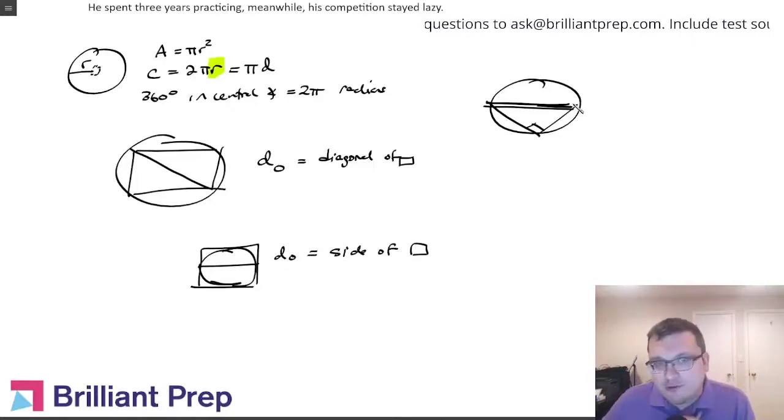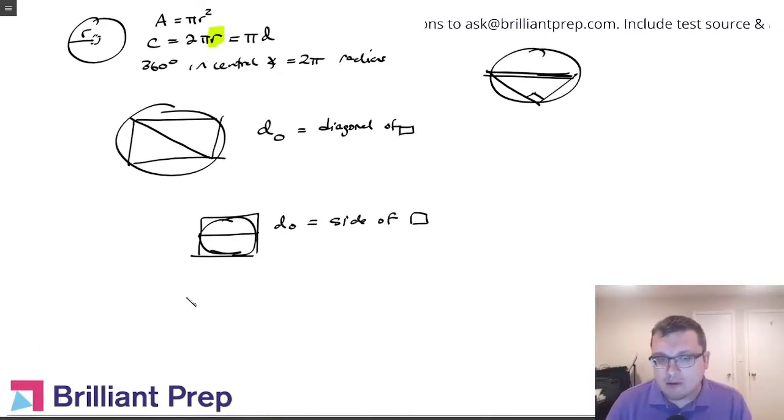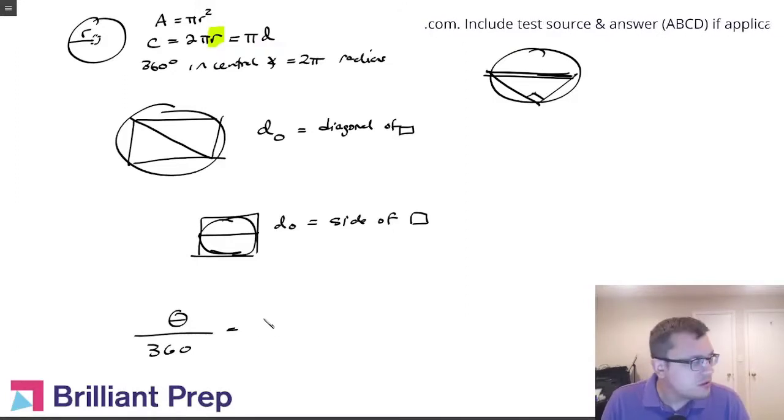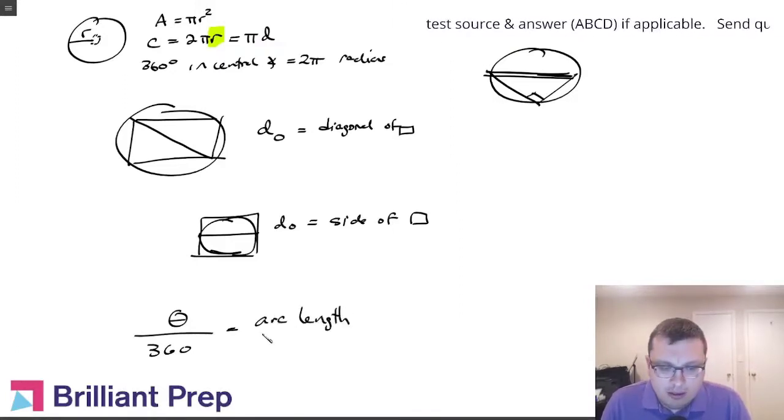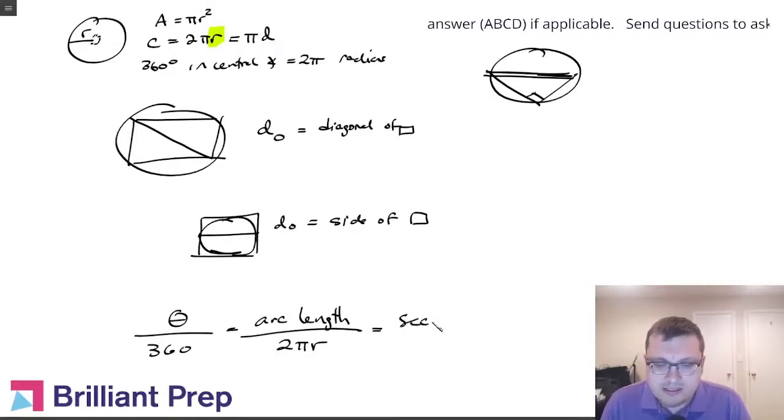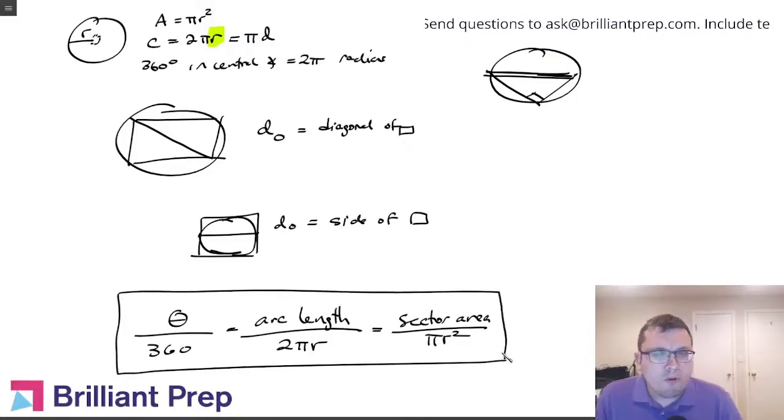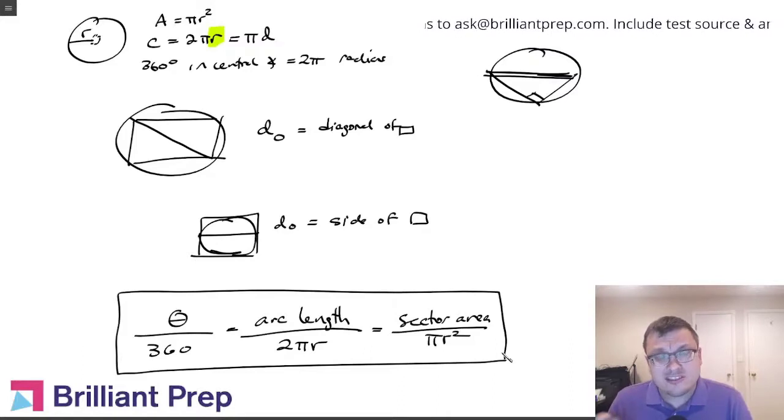The formula I want to give you for certain hard questions with circles looks like this: theta over 360 equals arc length over 2 pi r, which equals sector area over pi r squared. This is a useful proportion that you can use to help you on questions involving arc lengths and sector areas.